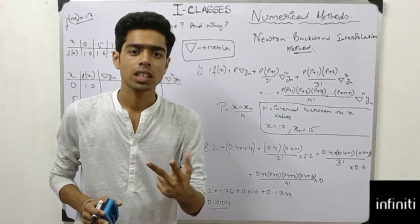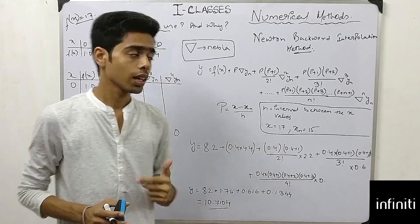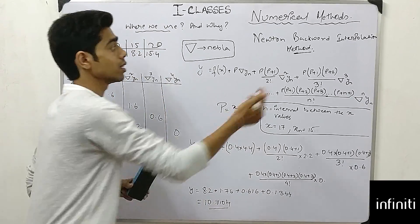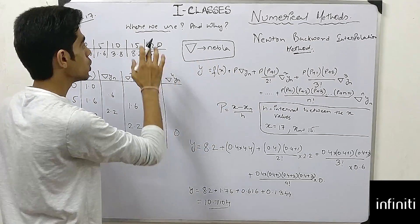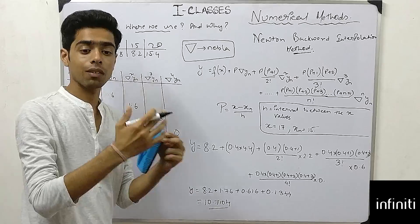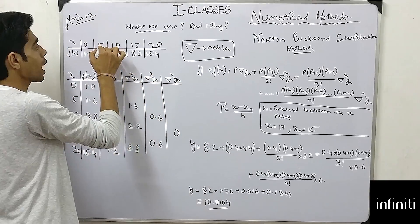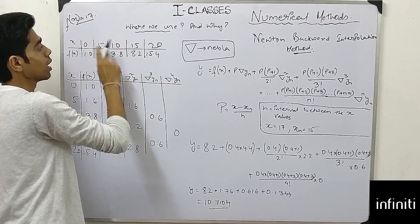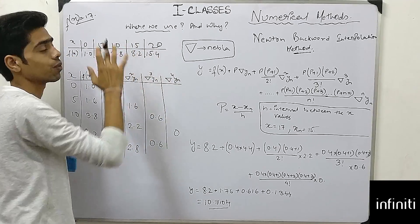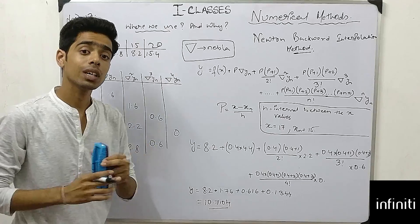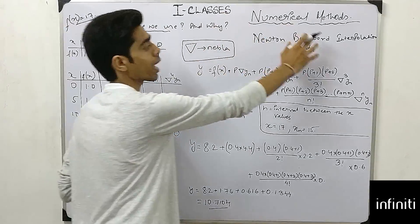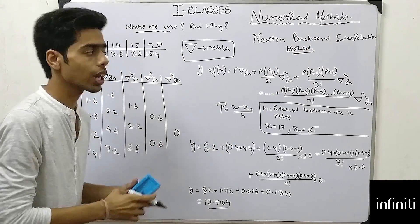From these four methods, when do you select Newton's Backward Interpolation Formula? You use this formula when you have an equal interval between numbers — for example, 5 minus 0 is 5, 10 minus 5 is 5, 15 minus 10 is 5, 20 minus 15 is 5. The equal interval is 5, so you use Newton's Backward or Forward Interpolation Formula when you get equal intervals.